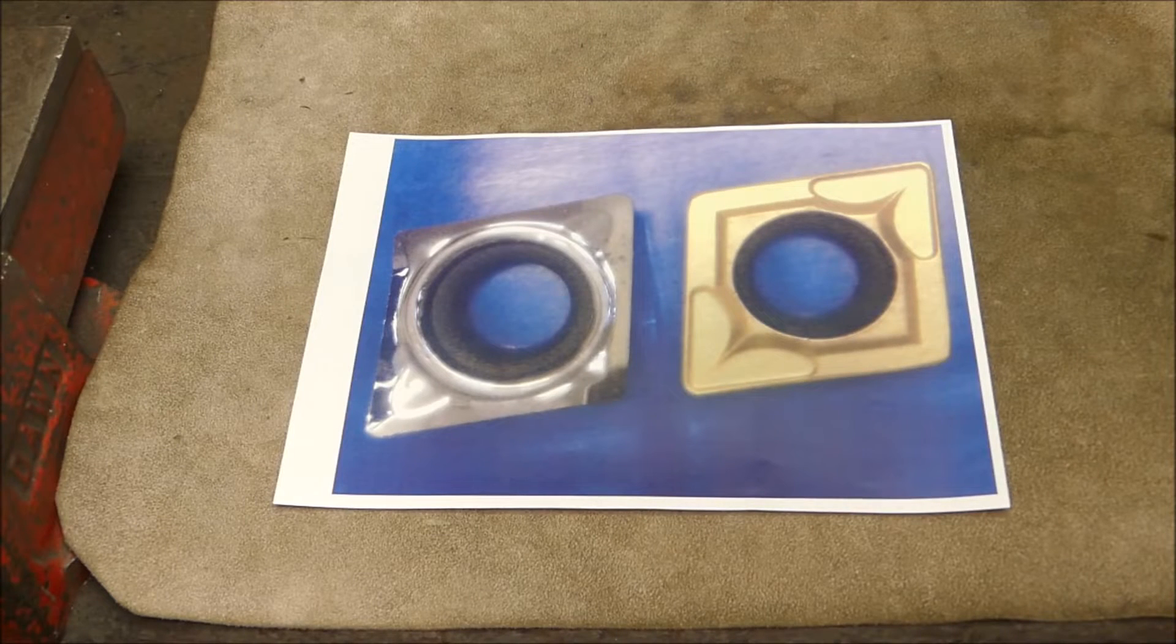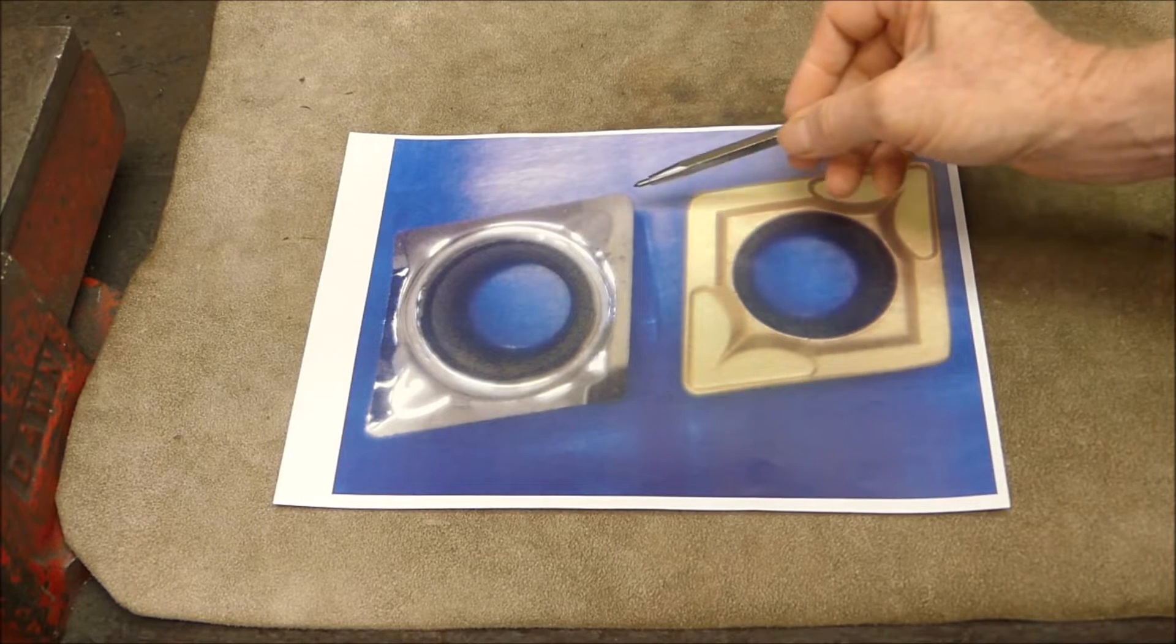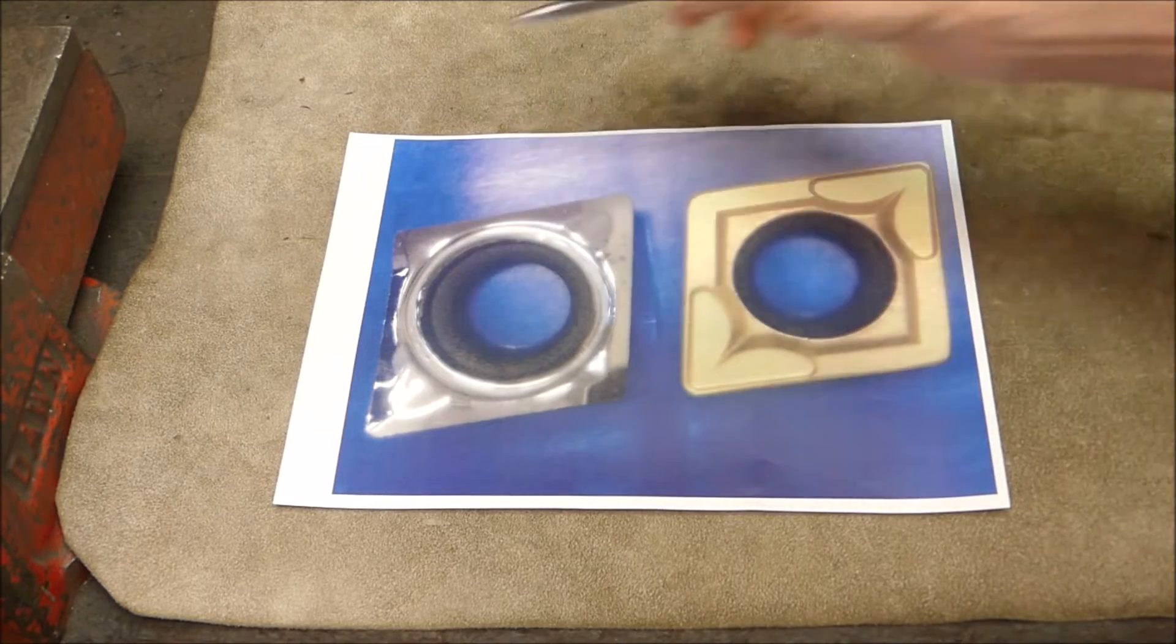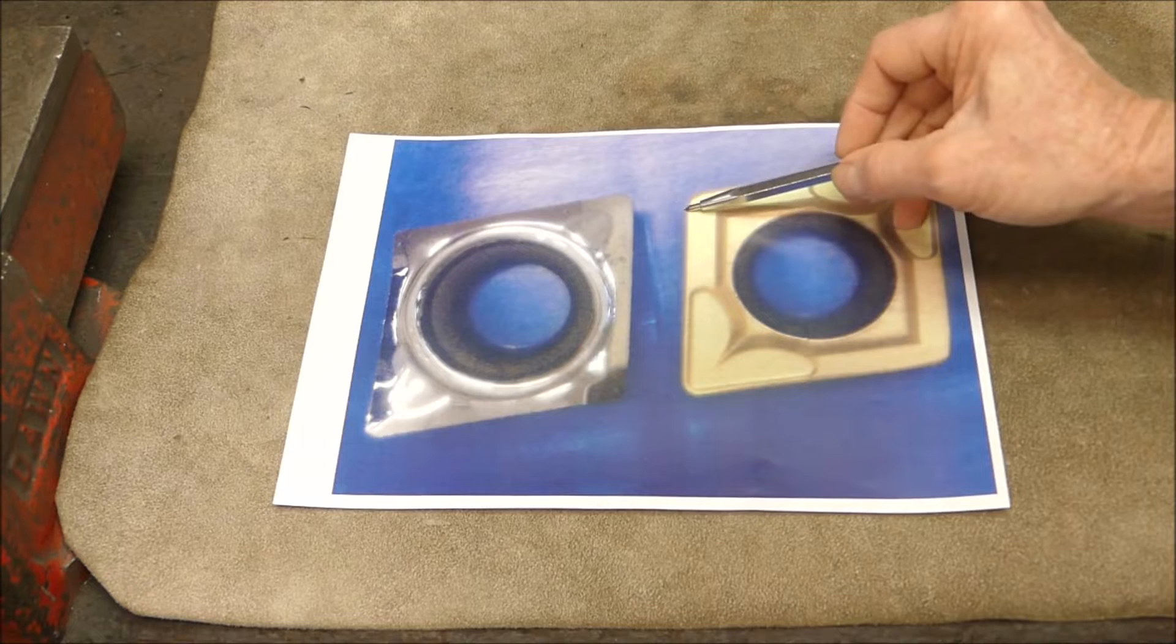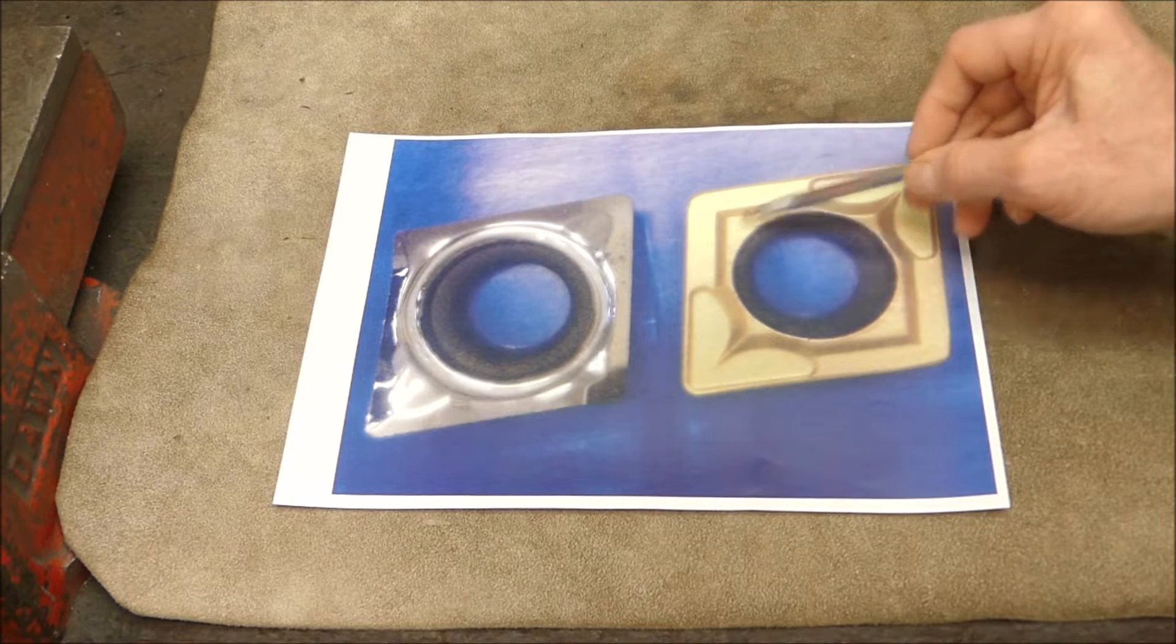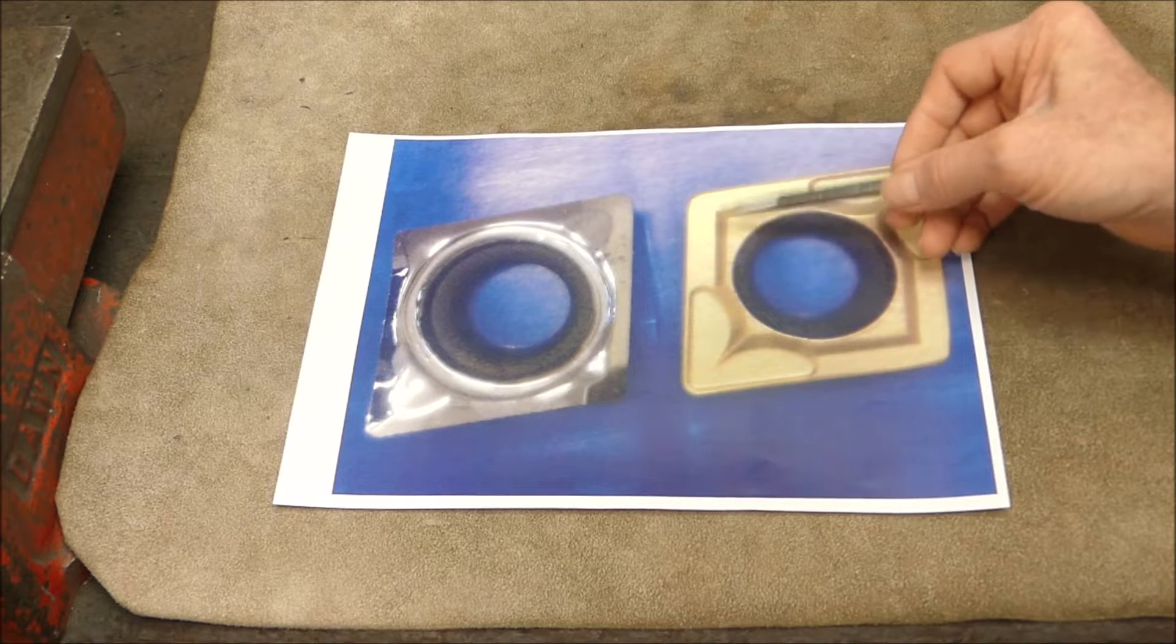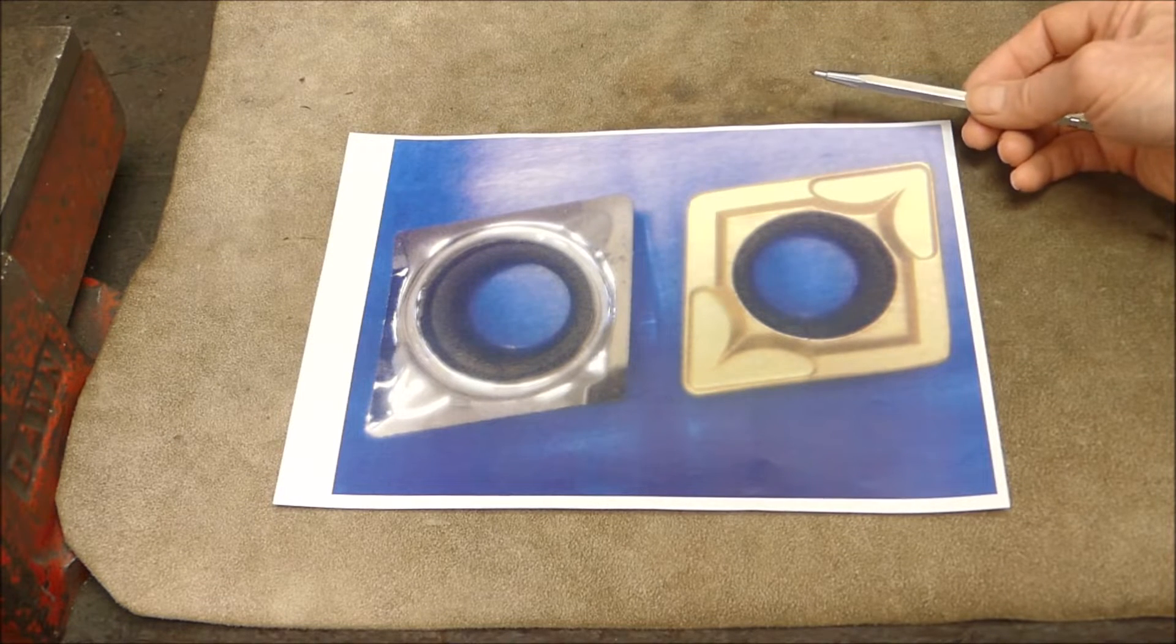All right, the first obvious difference is that this has got a much sharper edge on it. This has got your regular rolled edge that you get with inserts, they're pressure formed, they're not machined, they just come out of the press, they coat them if they want to, and away they go.